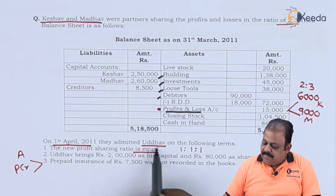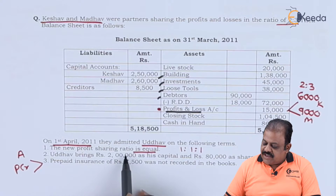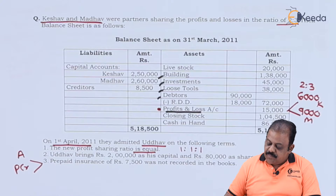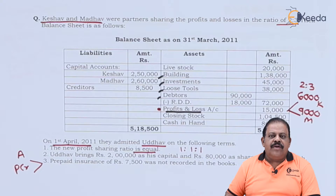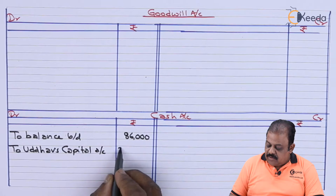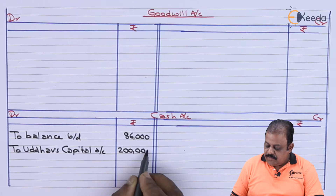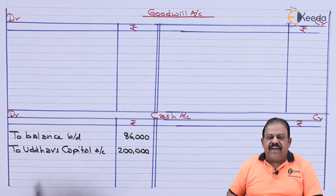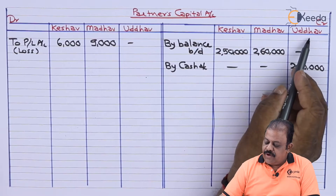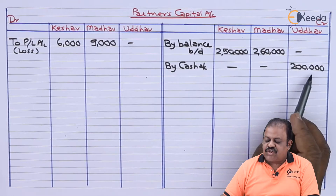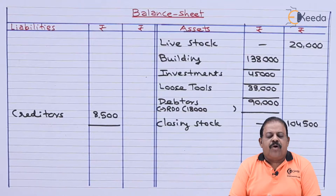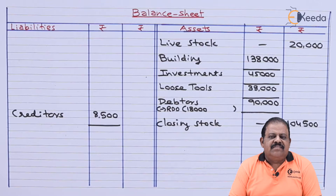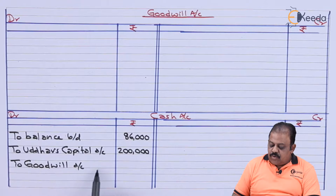On 1st April, they admitted Uddo on the following terms. The new profit sharing ratio is equal — 1:1:1. Uddo brings 2 lakhs as his capital, so cash comes in: debit cash account, credit Uddo's capital account with 2 lakhs. He also brings 80,000 as his share of goodwill in cash, and it is retained in the business — debit cash account, credit goodwill account.